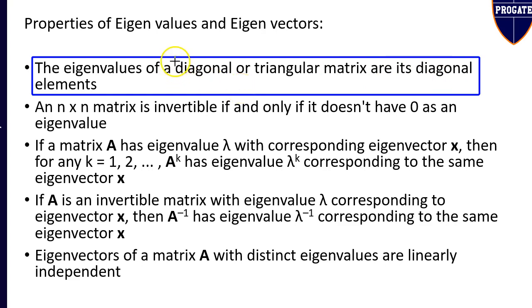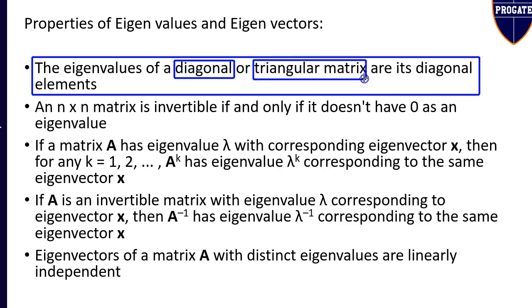By definition, a diagonal matrix is a matrix in which all the elements are zeros except the diagonal elements. By definition, a matrix is called a triangular matrix if it is either an upper triangular matrix or a lower triangular matrix.